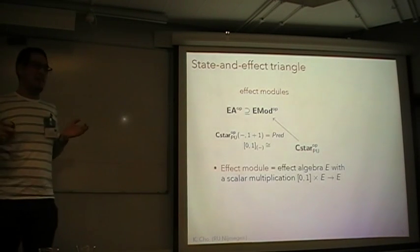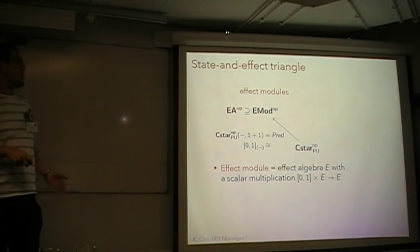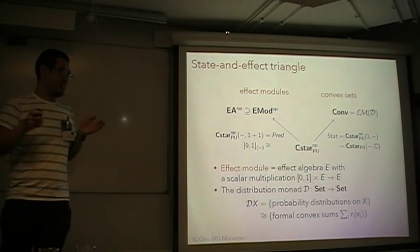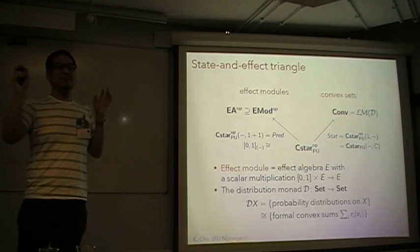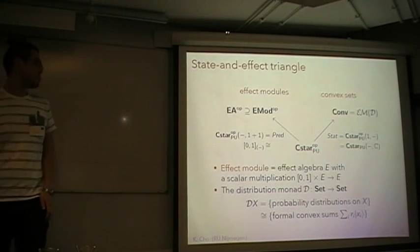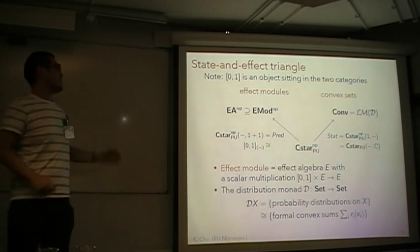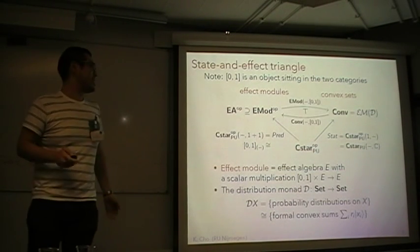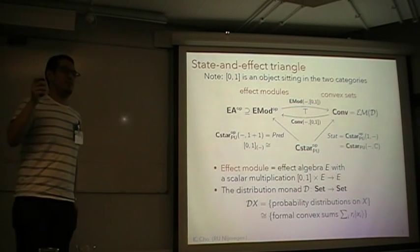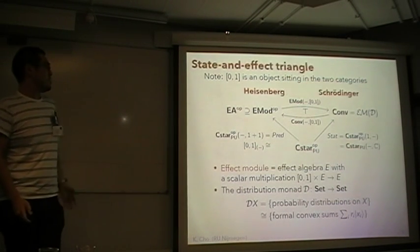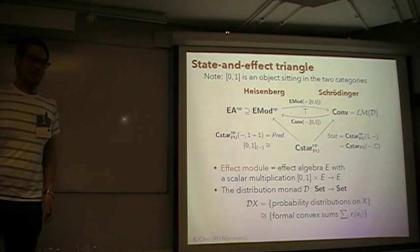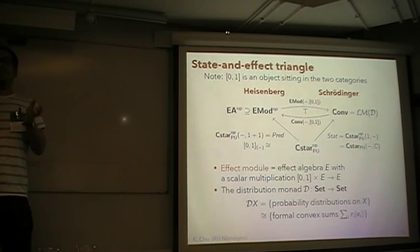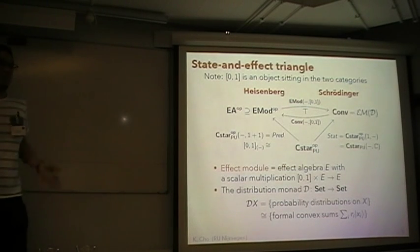We started from C*-algebras with positive unital maps and we get effect algebras of predicates. In fact, we have a little more structure, namely scalar multiplication — this is called an effect module. On the other hand, states form a convex set, which is an algebra for the distribution monad. The unit interval is an object in both categories — it is an effect module and at the same time a convex set — so we get a dual adjunction by hom-ing into the unit interval. This is what we call the state-effect triangle, and it describes a duality between states and effects, or a duality between the Schrödinger and Heisenberg pictures.